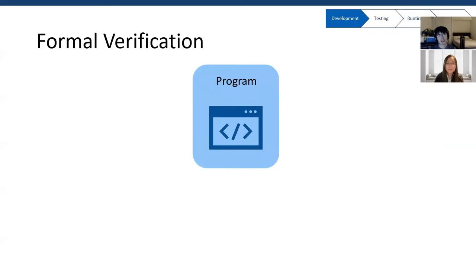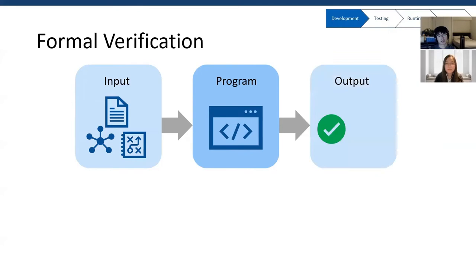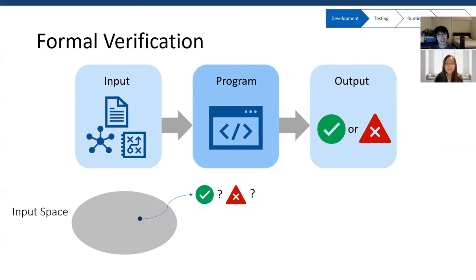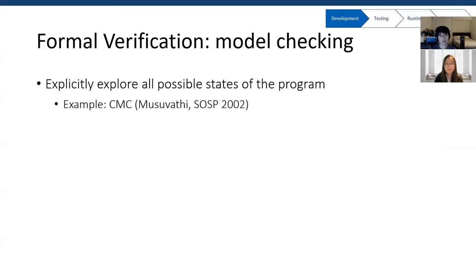Besides static checking, another option at the development stage is formal verification. Given a program, its runtime behavior is determined by its input data, the environment, and the order between events — which we call interleaving. We can treat all of these as input. Given a specific input, we look at the program's behavior, which can be correct or incorrect based on the specification. If we have a way to say that the program is correct with all possible inputs with regard to a correctness specification, we call this formal verification. The first way to do formal verification is model checking, which treats the program as a state machine and iterates through all possible states to make sure the program behaves correctly.